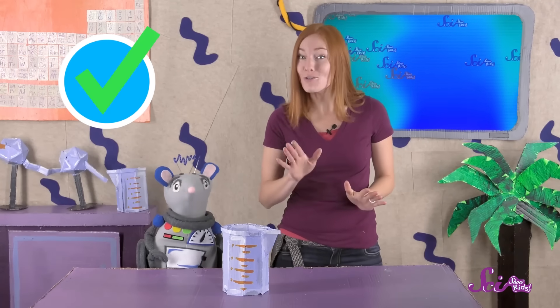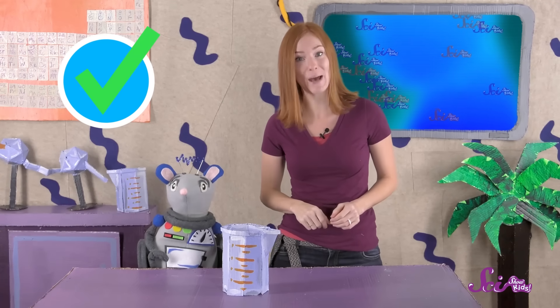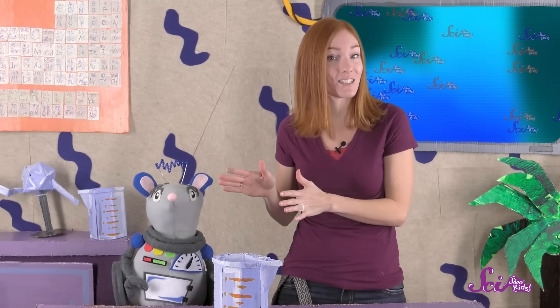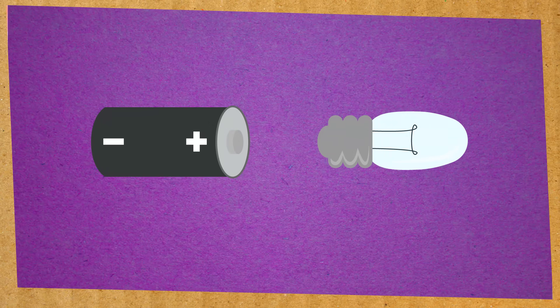And if you look at a circle, you can see that it goes around and around, and doesn't have any spaces or gaps in it. And that's true of a circuit, too. There can't be any spaces in the path that electricity takes to get from a battery to a light bulb. In a circuit, if electricity doesn't have a path to travel on, it stops.